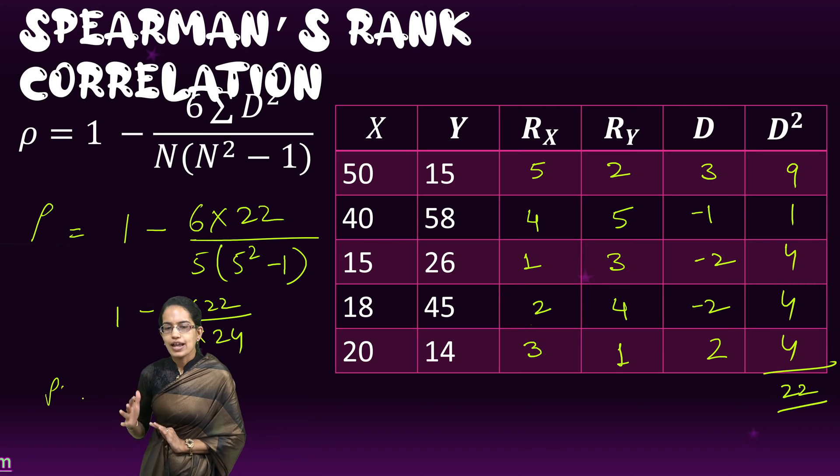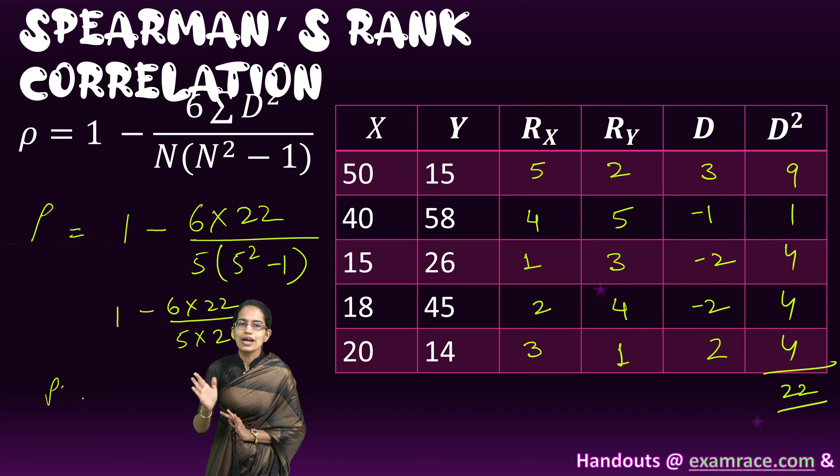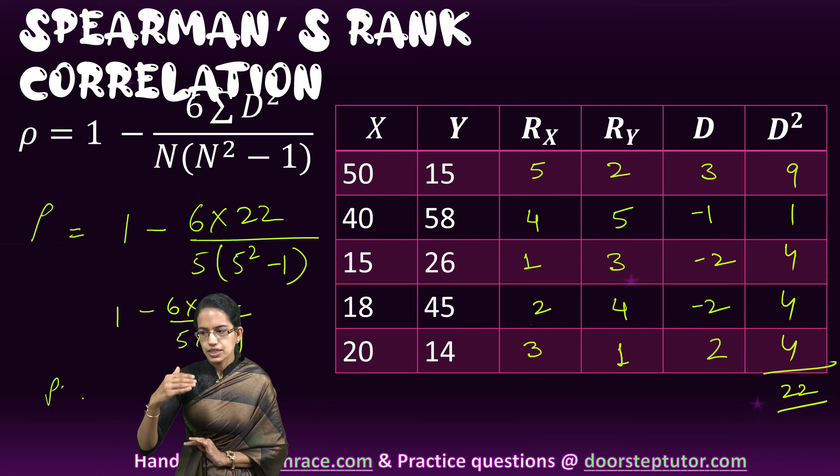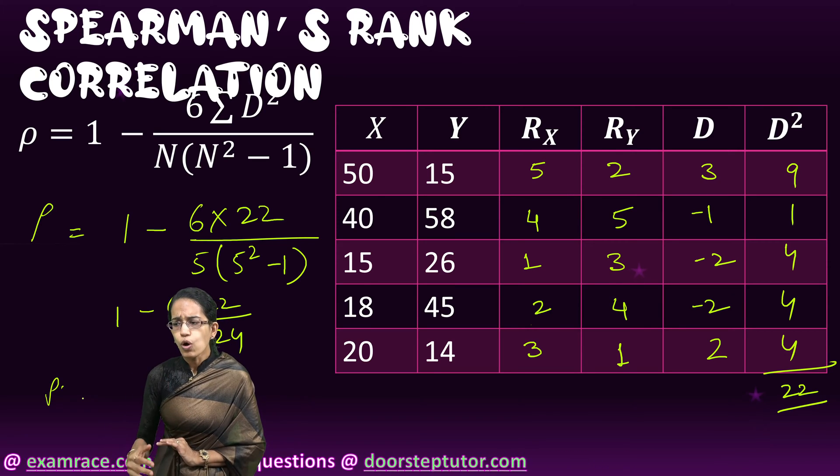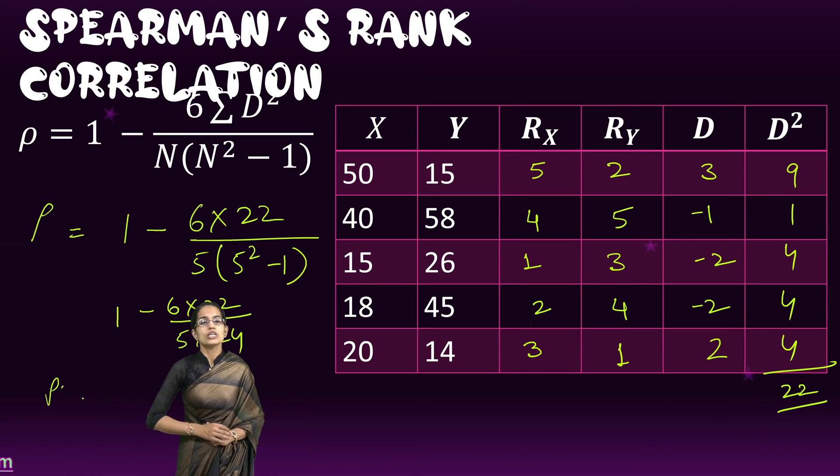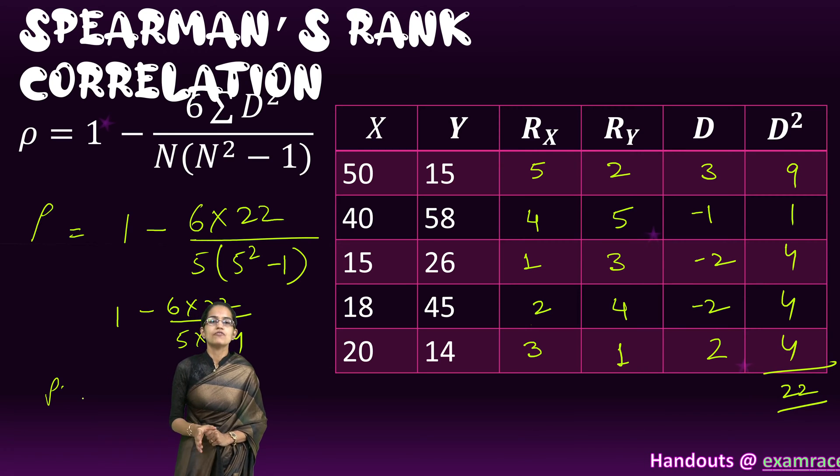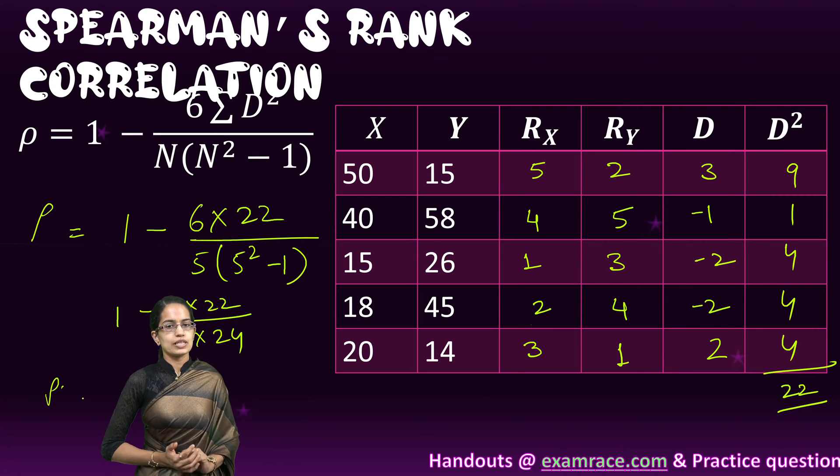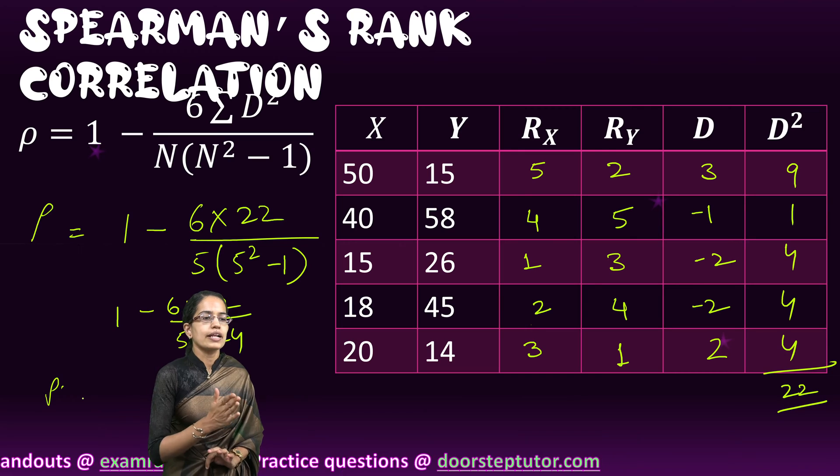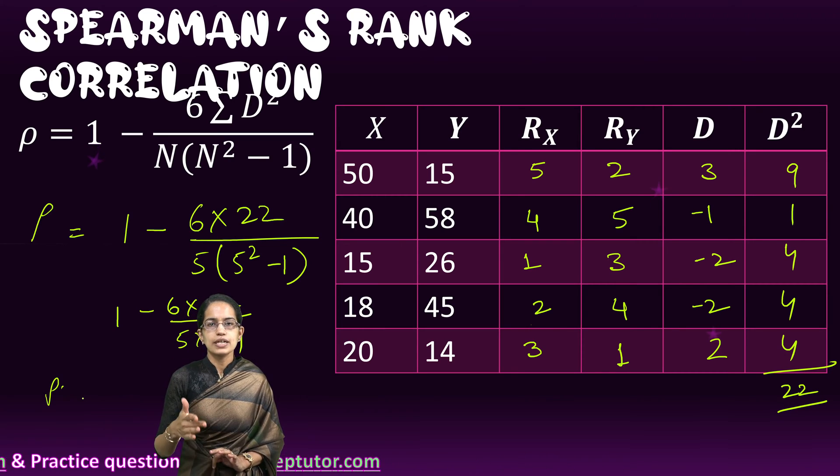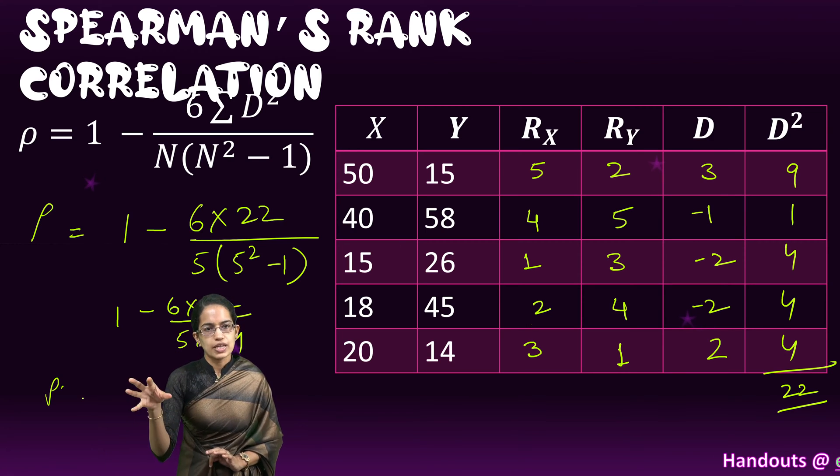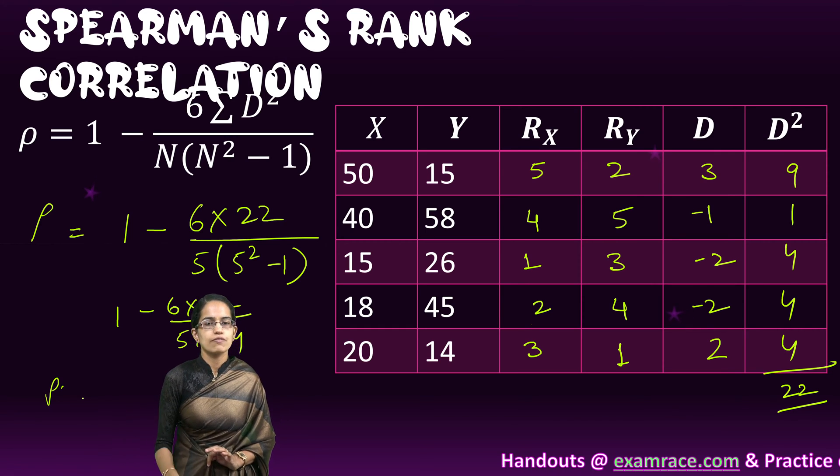As we know, the values of the correlation would lie always between plus 1 to minus 1. And based on what we have understood in the introduction, we would have the ranking that would be obtained. The method is very applicative because we are not taking the exact values, we are just ranking the values and finding the difference between the ranks. Once we find the difference between the ranks, we square those differences and multiply it by 6 in the numerator. And then in the denominator, we have number of units multiplied by square of the number of units minus 1. And this whole value is subtracted from 1.